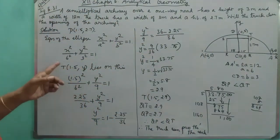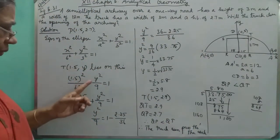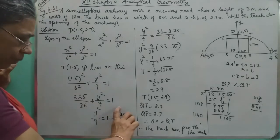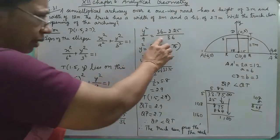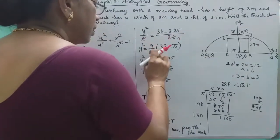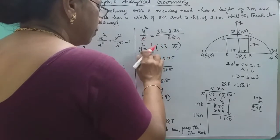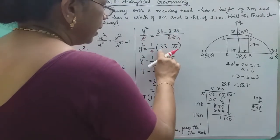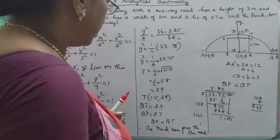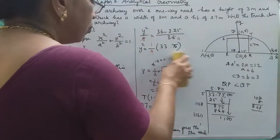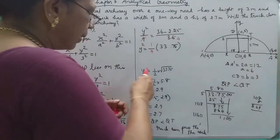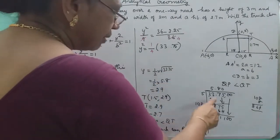We need to calculate the y value at x equals 1.5. Using the ellipse equation: x squared over a squared plus y squared over b squared equals 1. So 1.5 squared is 2.25 over 36, plus y squared over 9 equals 1. This gives us y squared over 9 equals 33.75 over 36. Taking the square root, y equals one half times root of 33.75.